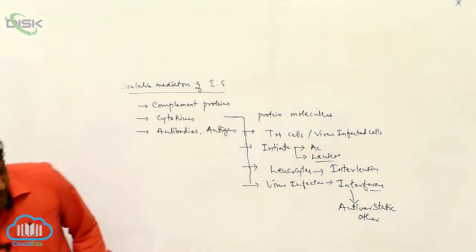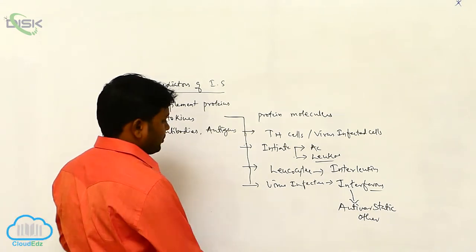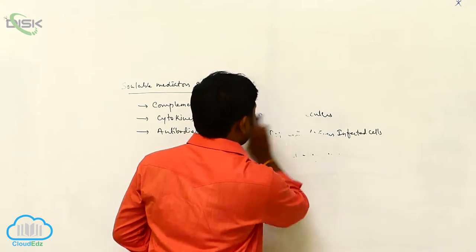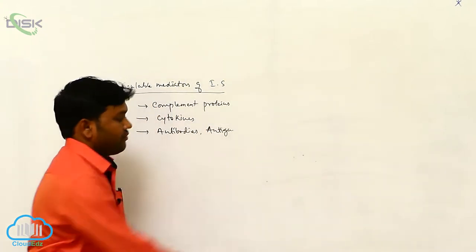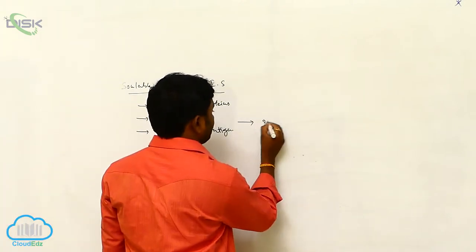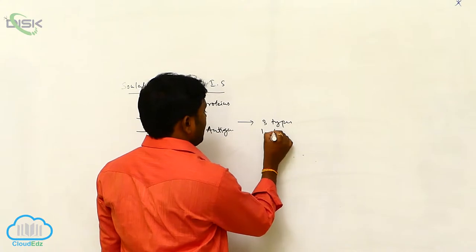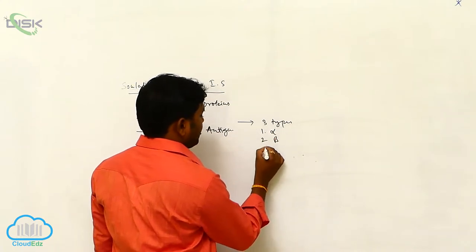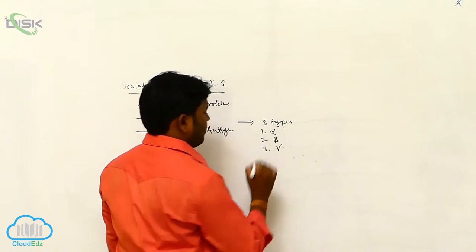There are three types of interferons: alpha, beta, and gamma.